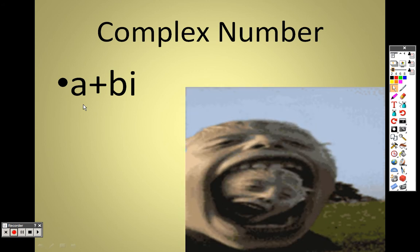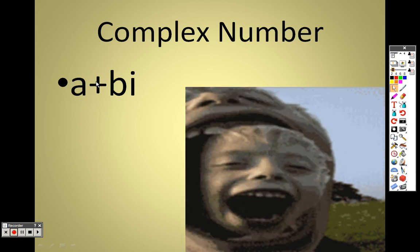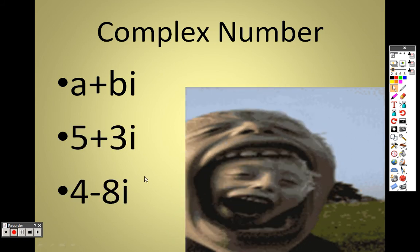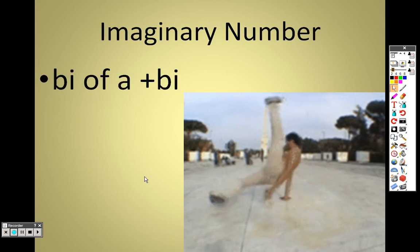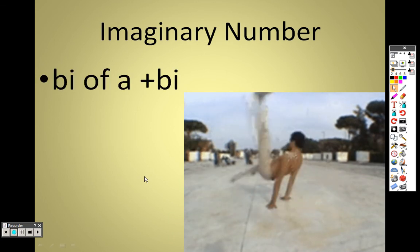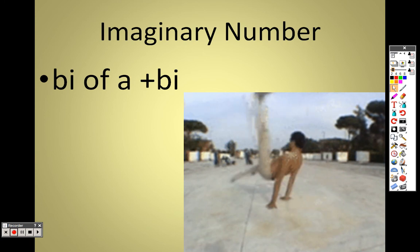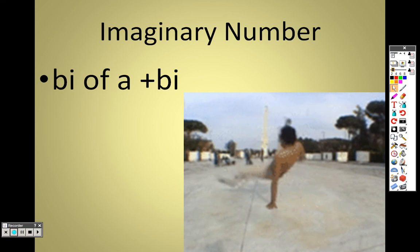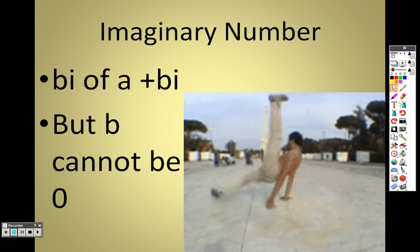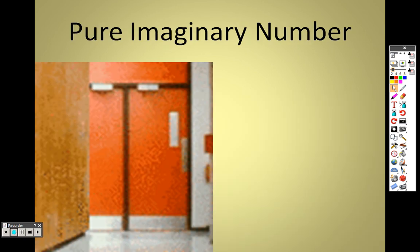Complex numbers come in the form of a + bi, meaning a regular number and a number with an i. For example, 5 + 3i is an example, and 4 − 8i is an example. Imaginary numbers are numbers that have i's in them — a number with just i, or a number plus a number with an i. But the number with an i can't be 0; you can't have a 0i.